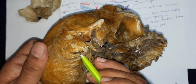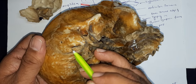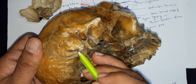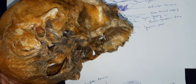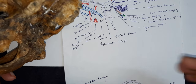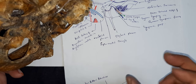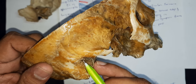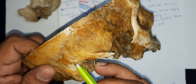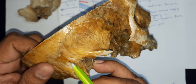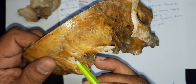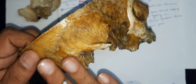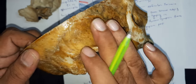This is the digastric notch, in which the posterior belly of the digastric muscle attaches — the anterior belly originates from the mandible, and both join near the hyoid bone. Behind this suprameatal triangle, we have the origin point for the auricularis posterior muscle.